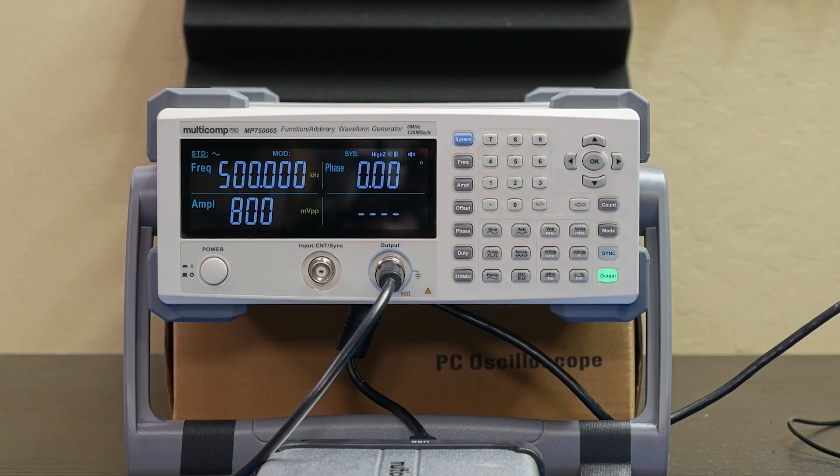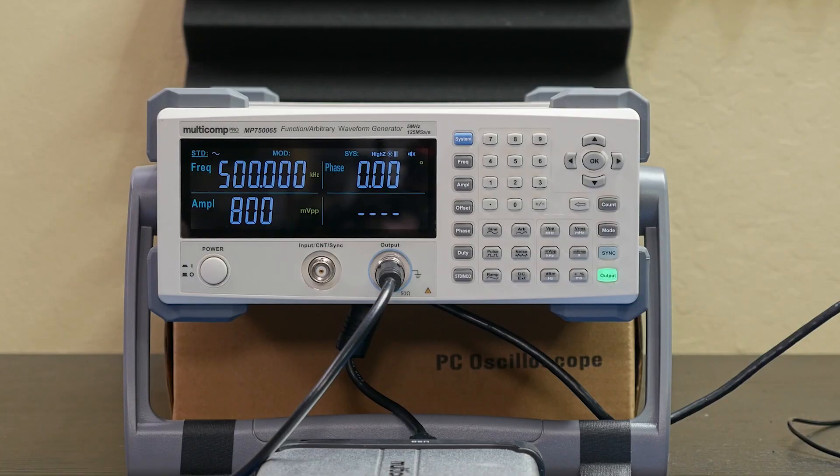Unlike the 200A, modern function generators can output wave shapes like sine, square, and triangles. Engineers use them to act as a circuit's clock, test filter designs, characterize op amp circuits, and a bunch of other things. So let's take a look at what a function generator is and how you use one.